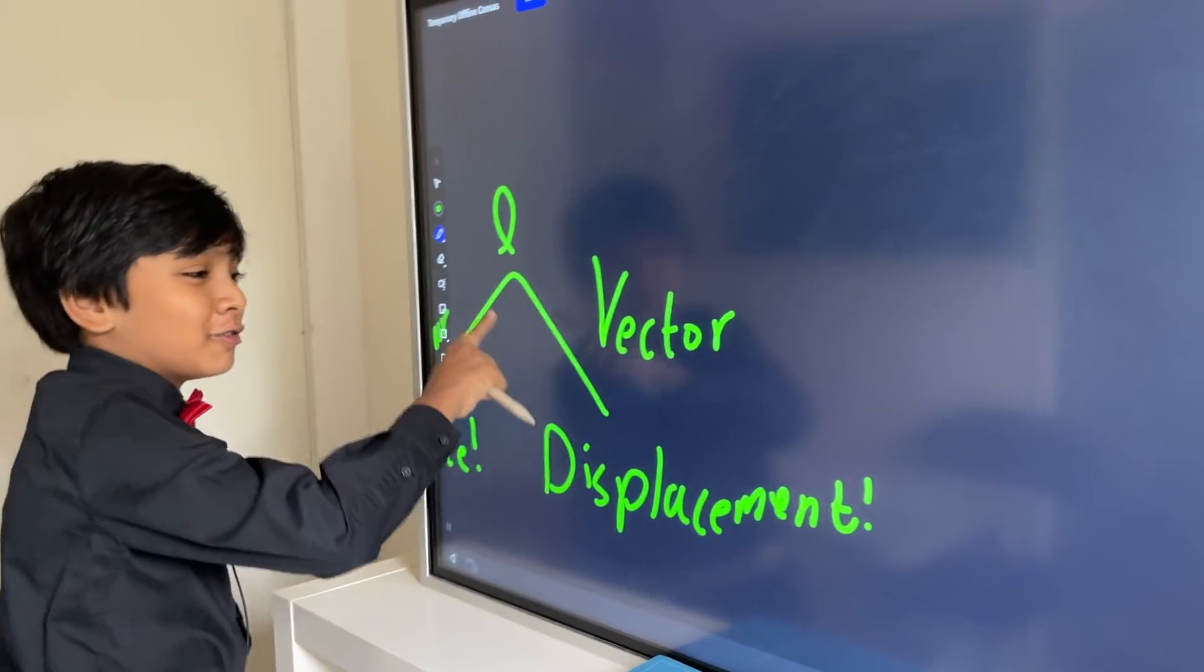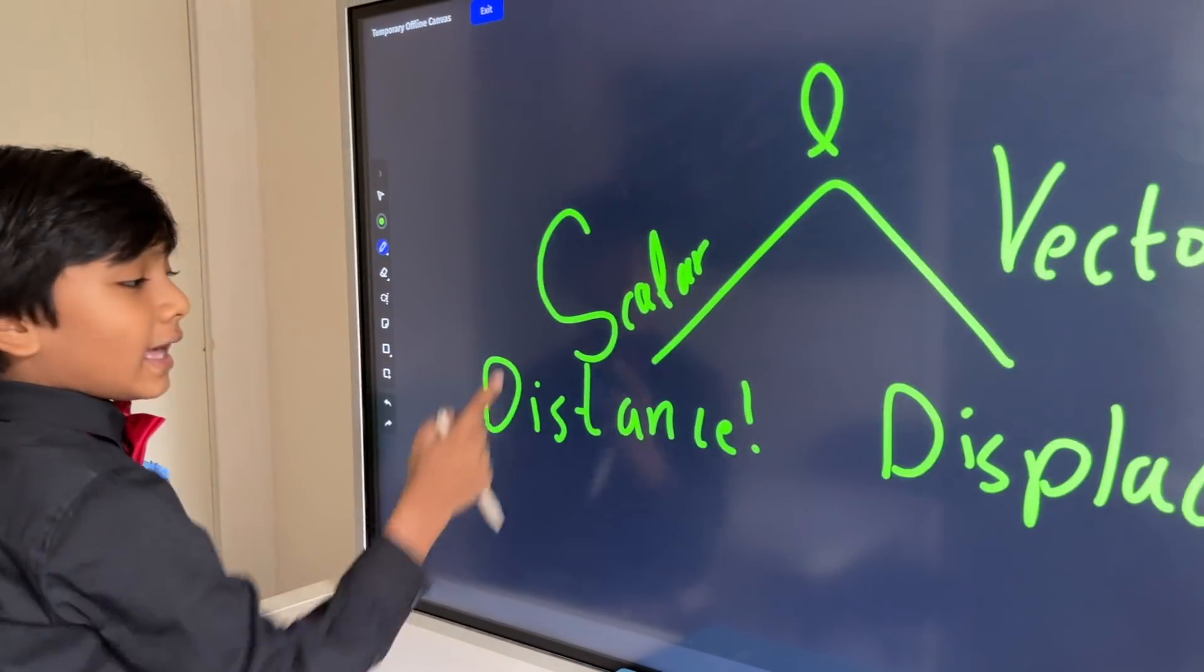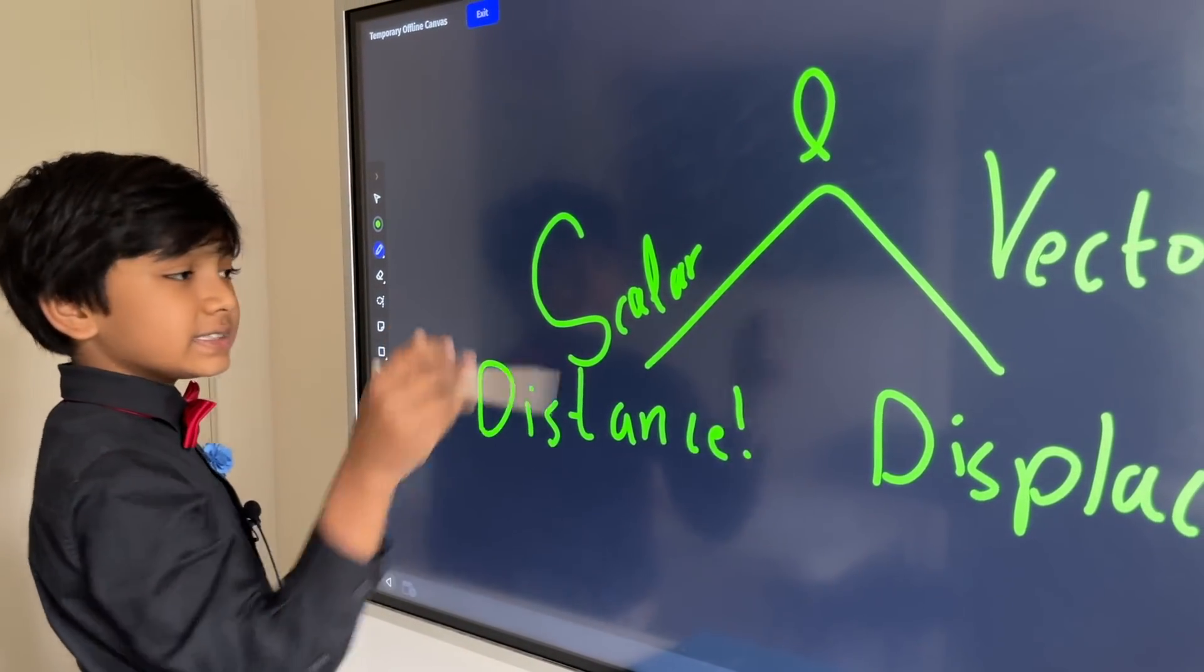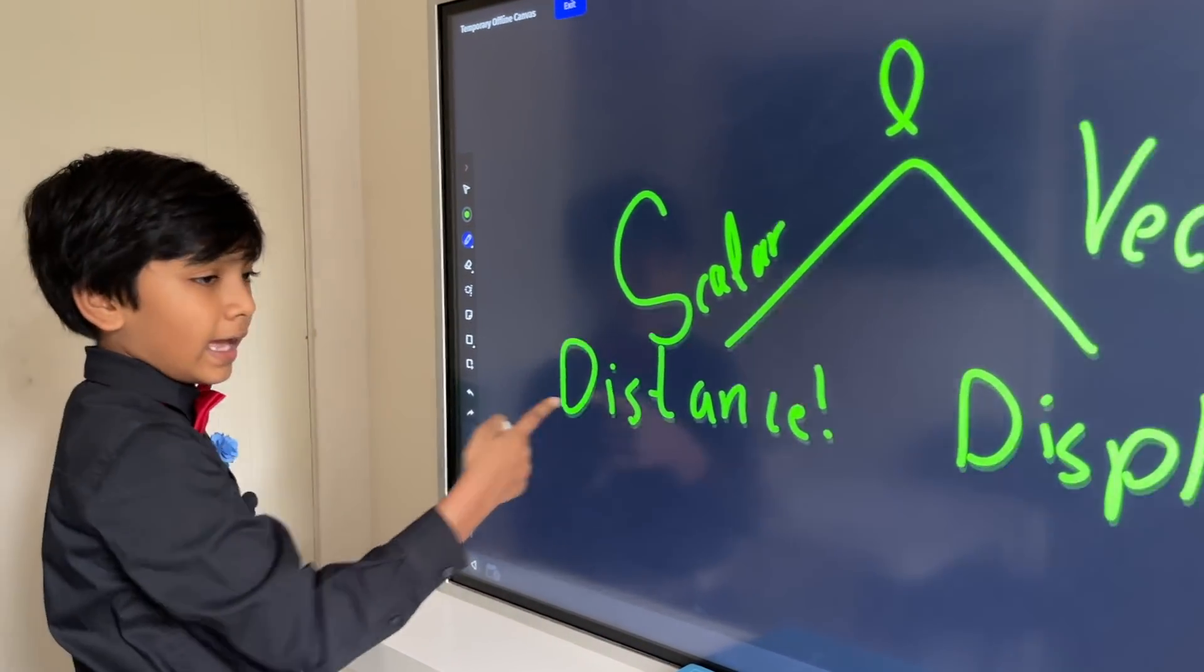I'm pointing at you, viewers. And so, that means that this is different than this. So, distance is a scalar. How? Well, it has no direction.